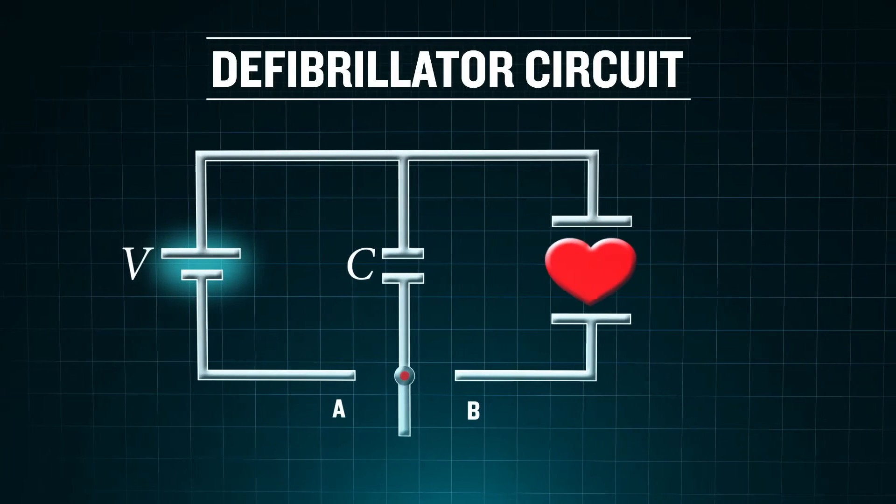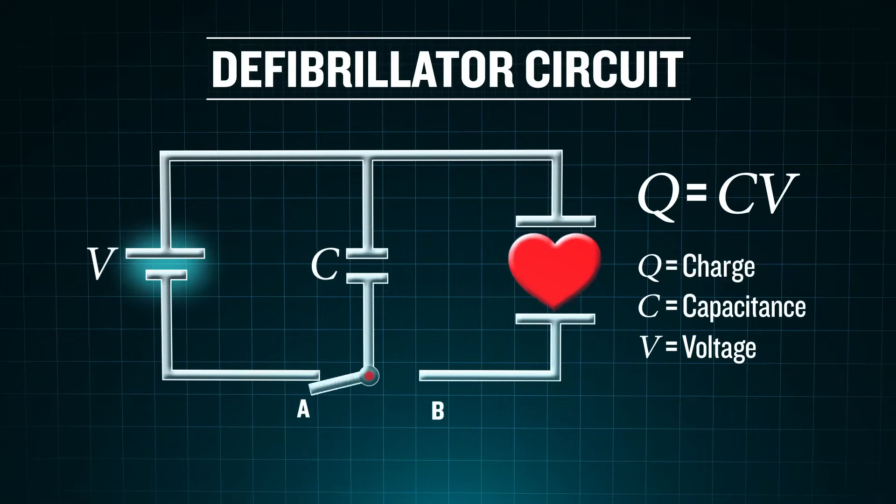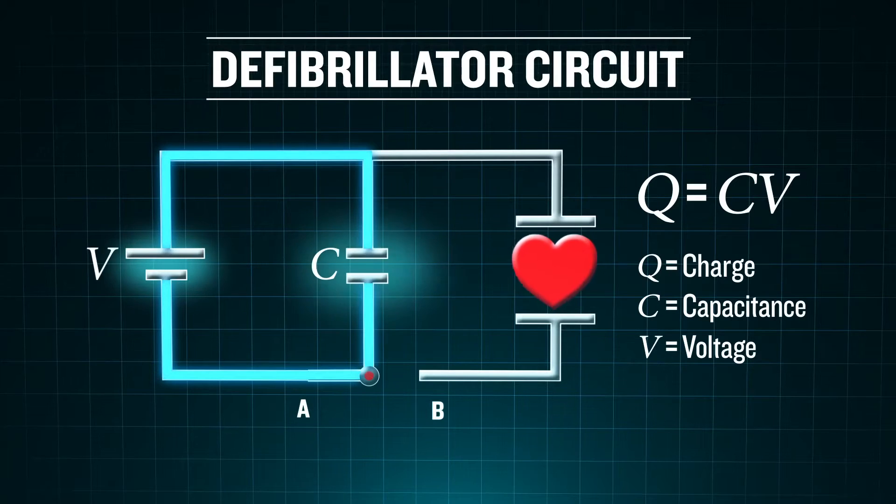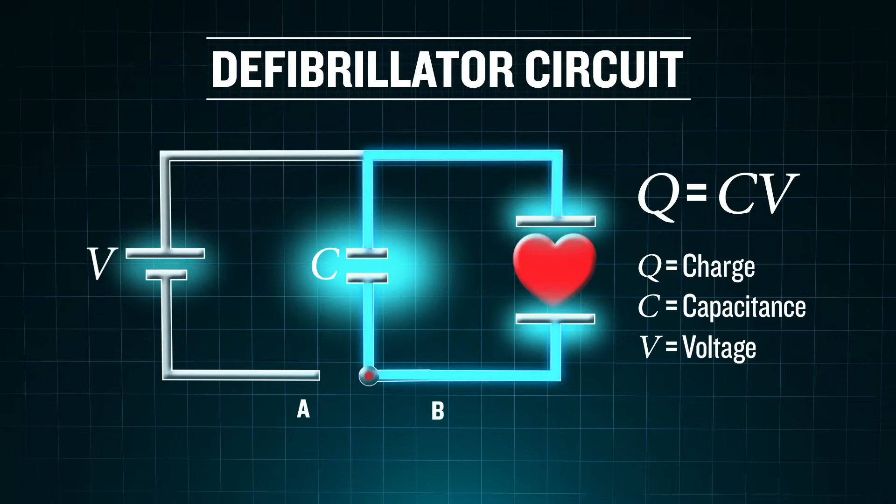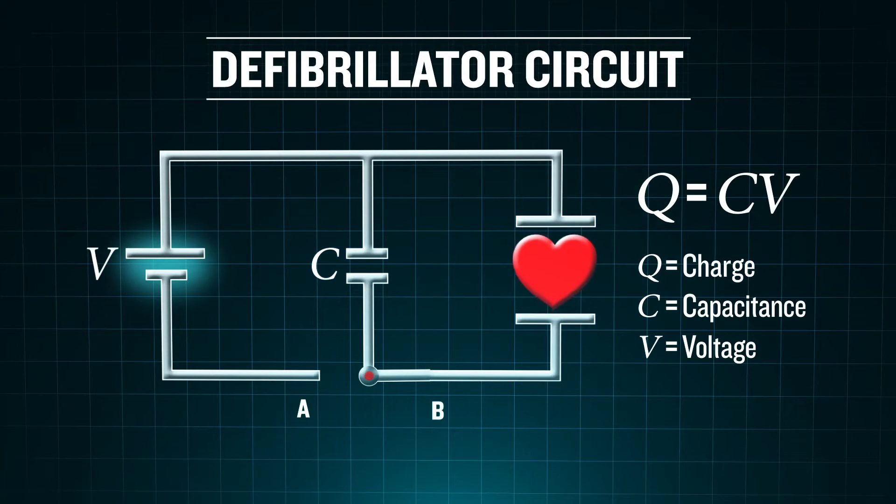In a defibrillator circuit, by closing the switch to position A, the capacitor will charge up to a voltage equal to the applied voltage. When shifted to position B, the capacitor rapidly discharges through the paddles to the person and helps get the heart beating normally.